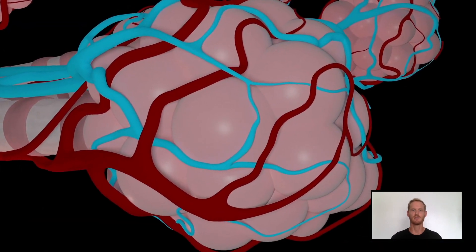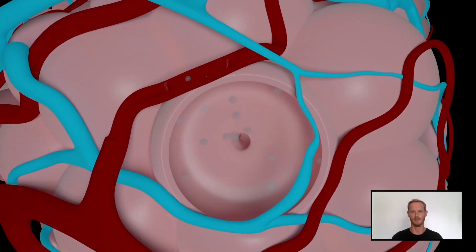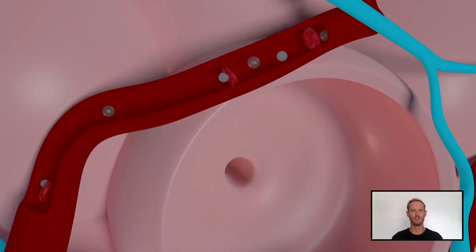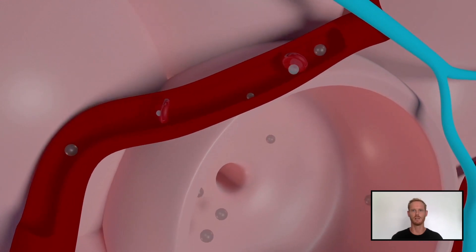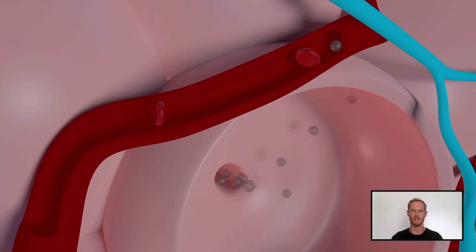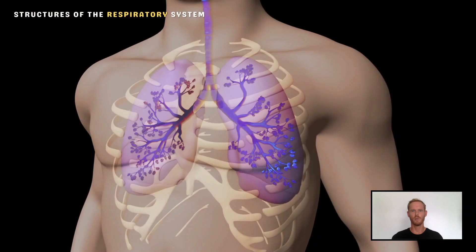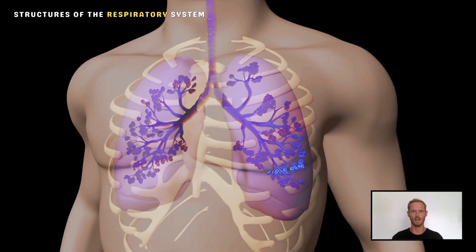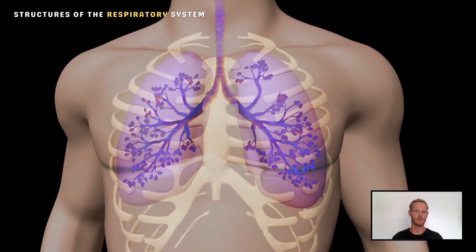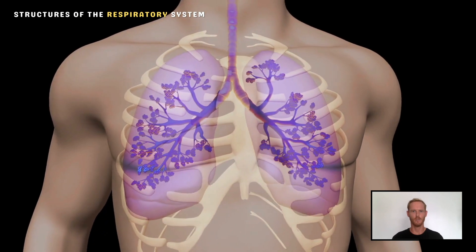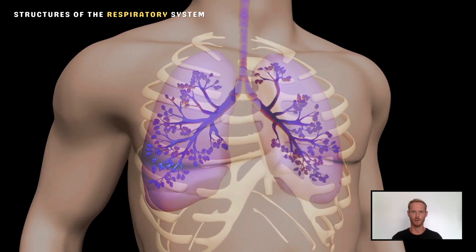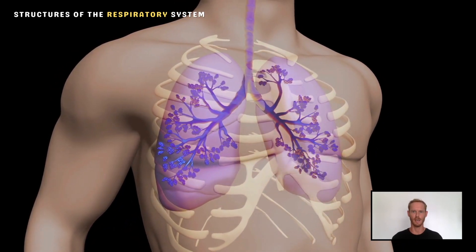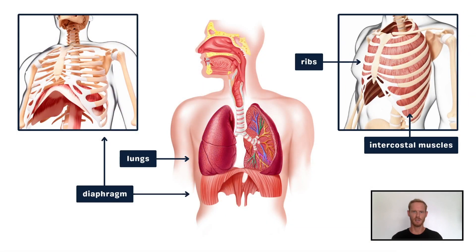The role of the breathing system is to move air into and out of the lungs so that oxygen needed for respiration can diffuse into the bloodstream and carbon dioxide can diffuse outwards. The lungs, located in the thorax or chest region, are expanded and compressed by the actions of the respiratory muscles and movement of the ribcage. The diaphragm is a large muscular sheet located just below the lungs, and the intercostal muscles sit between and control the movements of the ribs.